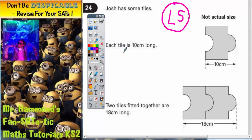It says Josh has some tiles. Each tile is 10 centimeters long. So from the start of the tile to the end of the tile is 10 centimeters long.